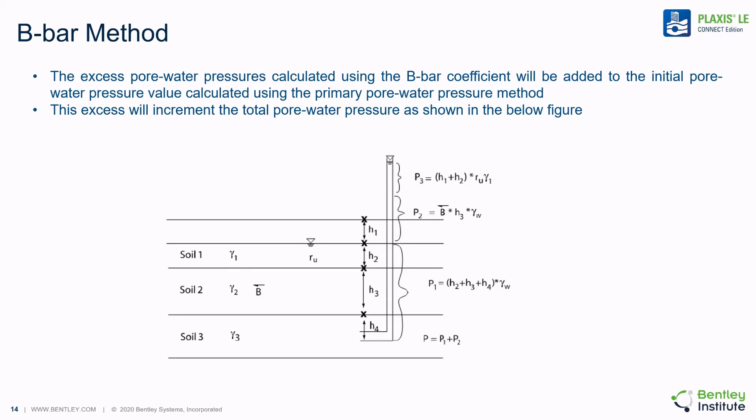The water table is measured to be halfway up the top soil layer, denoted as soil number one. The head at a particular point halfway up soil three is calculated as the sum of three separate pressures. First, the heads above the points are added together and multiplied by the unit weight of water to get a hydrostatic pressure. Then, the excess pore water pressures present in soil number two are calculated using the B bar value entered. Lastly, the R sub U pressure entered for soil number one is added into the equation, resulting in a calculation of total head.